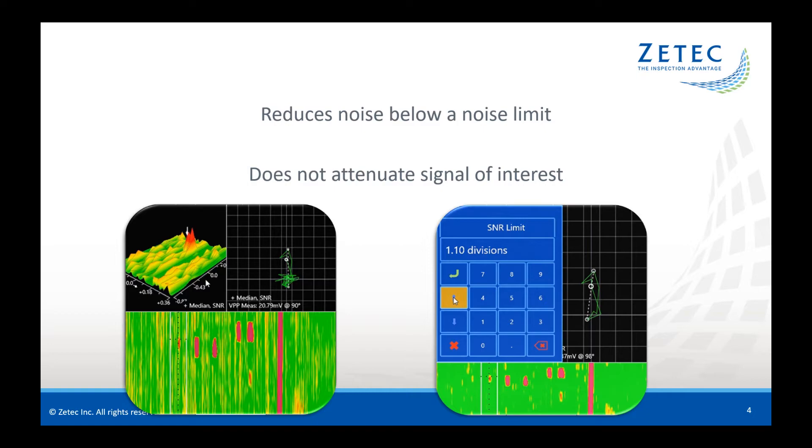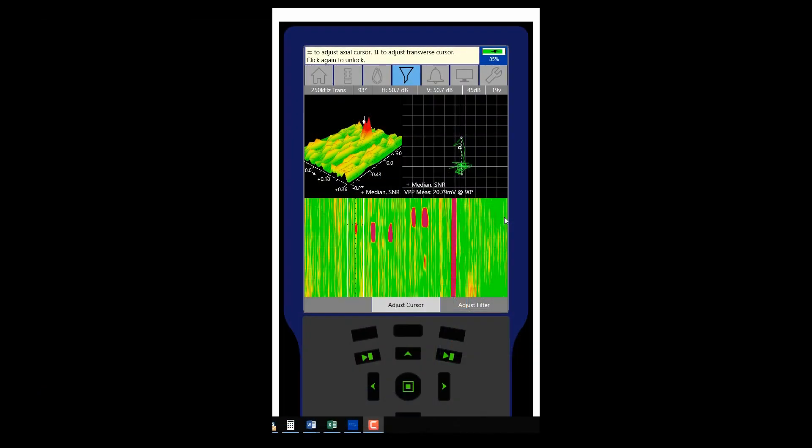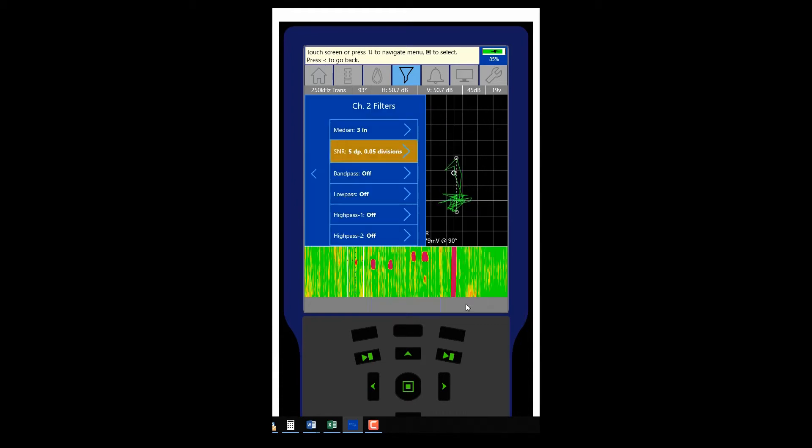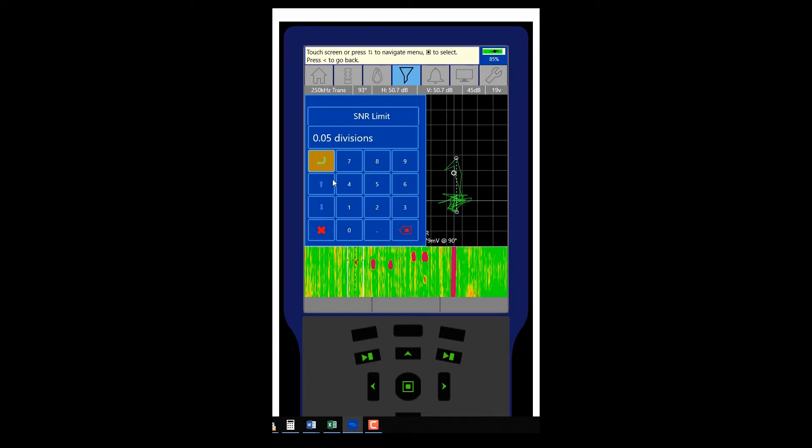Let's start off with a small notch signal in surface array data. So here's your signal here, and let's say you want to get rid of this baseline noise, but you want to keep the entire signal. So here's my SNR limit. So that's the lowest it goes, and it's in divisions.